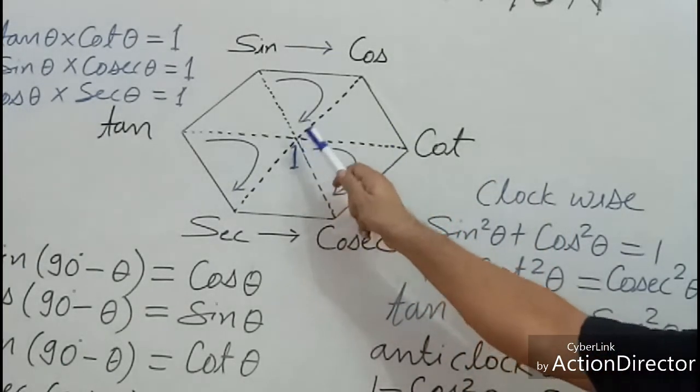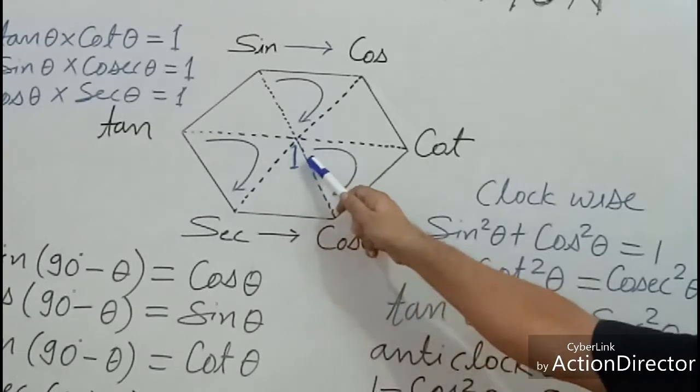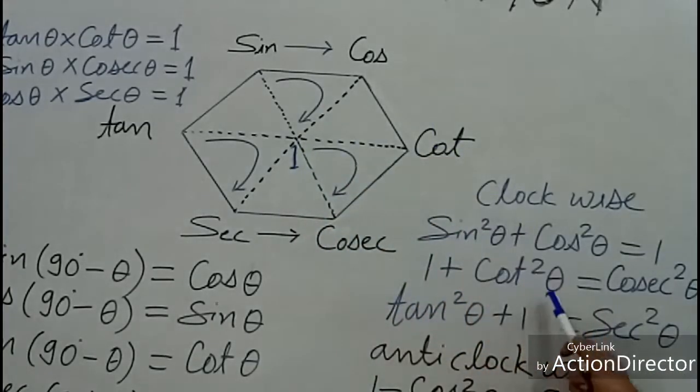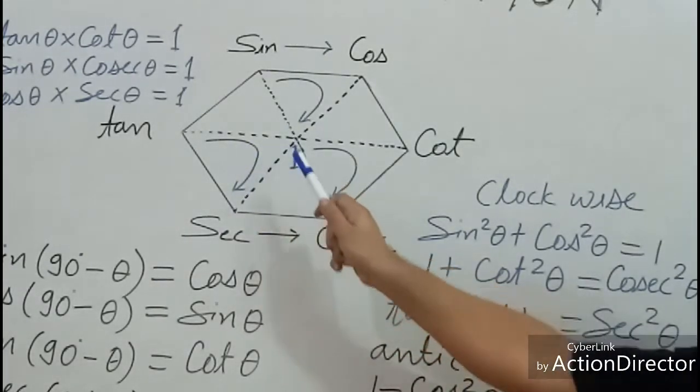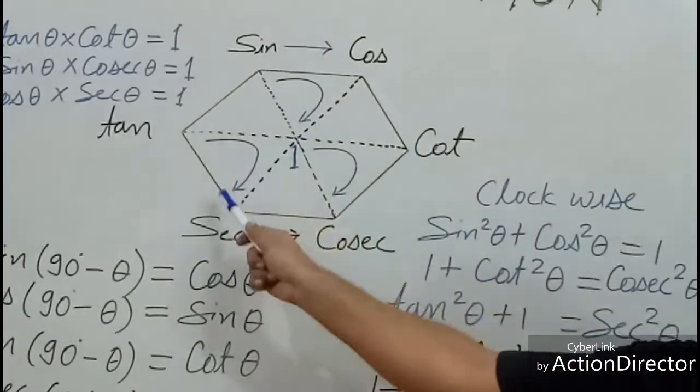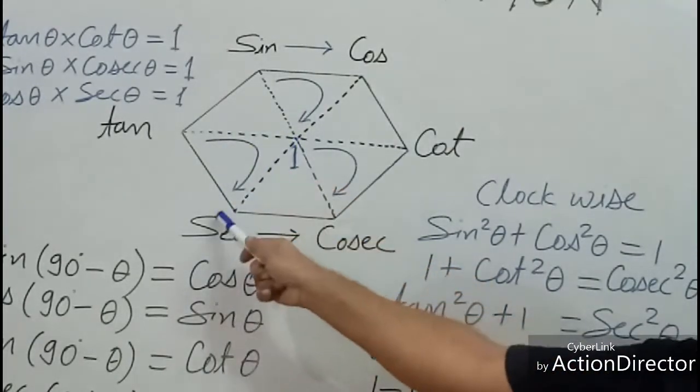You have to write one at the center. One plus cot square theta equals cosec square theta. Tan square theta plus one equals sec square theta.